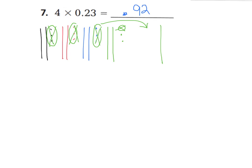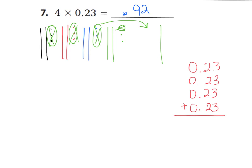And if you count it all up, it should be 92 hundredths. You can prove it with addition — just look here. By adding 23 hundredths 4 times, 4 groups of 3 hundredths would be 12 hundredths. Did you see how I had to regroup into 1 tenth? That's what we just did right here — and we had 2 left over. And now let's add up all of our tenths: 2, 4, 6, 8 plus 1 more is 9 — just like our model shows us. So we did a great job with that model.